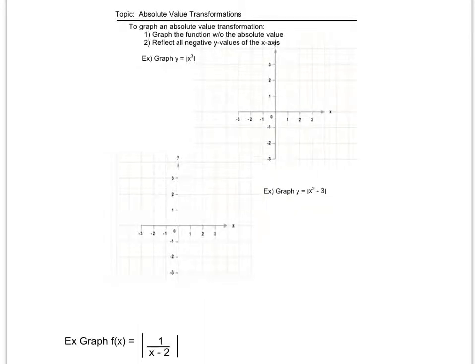When we want to graph an absolute value transformation, in other words when we have a function inside of absolute value bars, all we're going to do is graph the function as if the absolute value bars were not there. Then all we're going to do is take any y values that are negative and reflect them up over the x-axis, since we can't have negative y values when it comes to getting a final answer for absolute value.